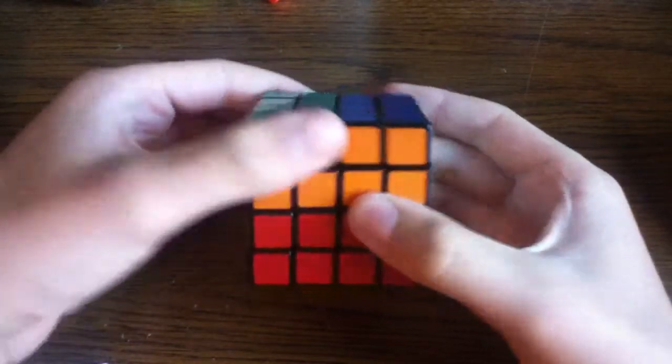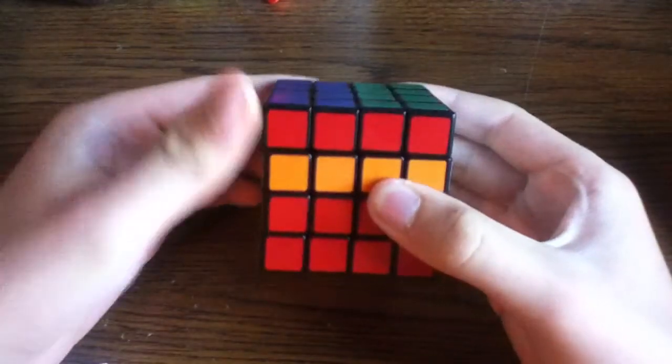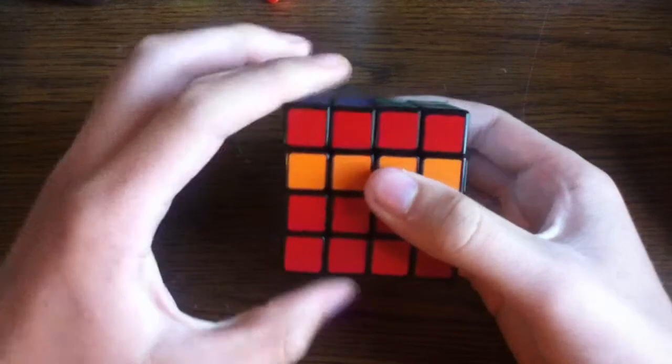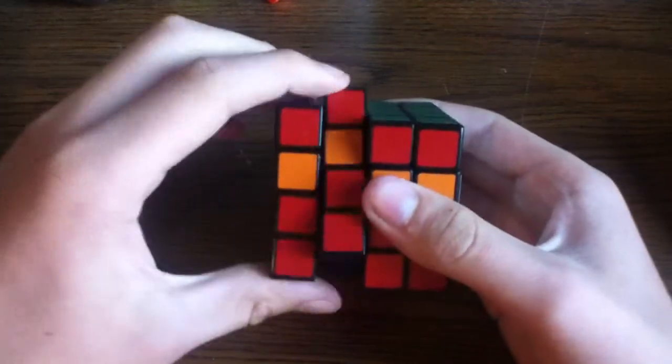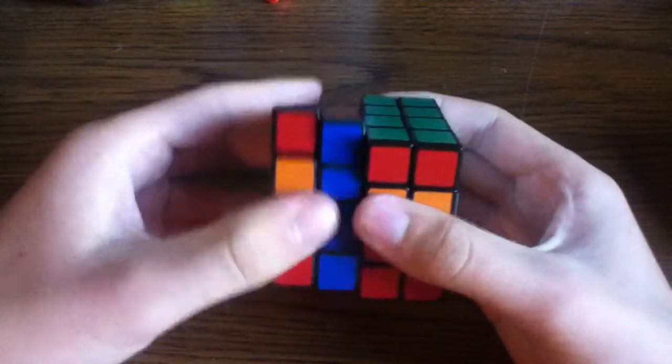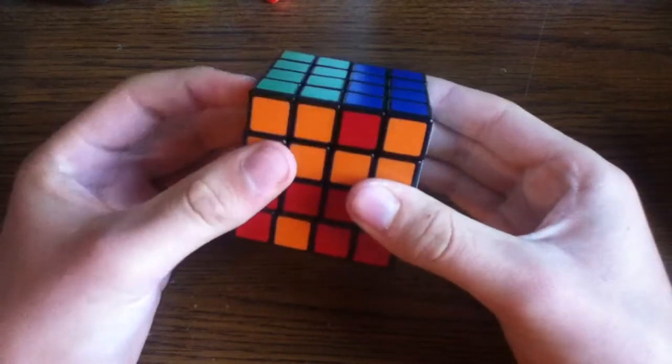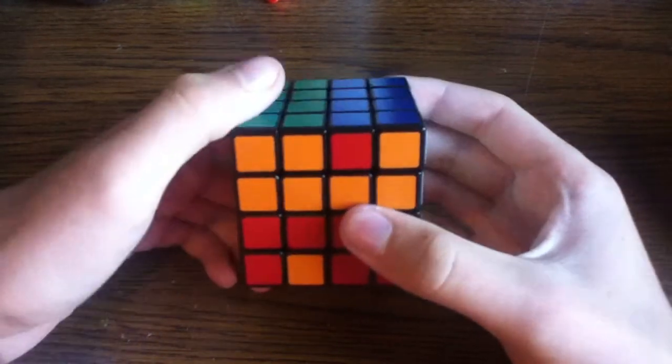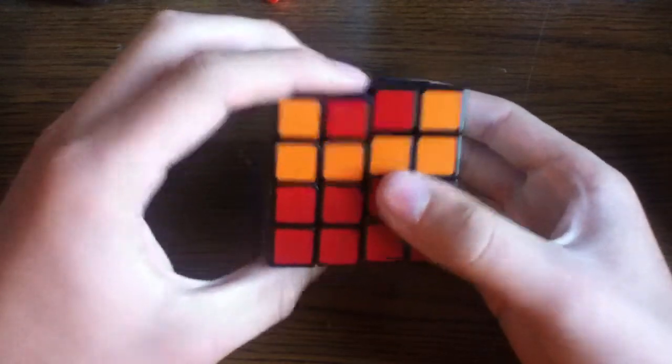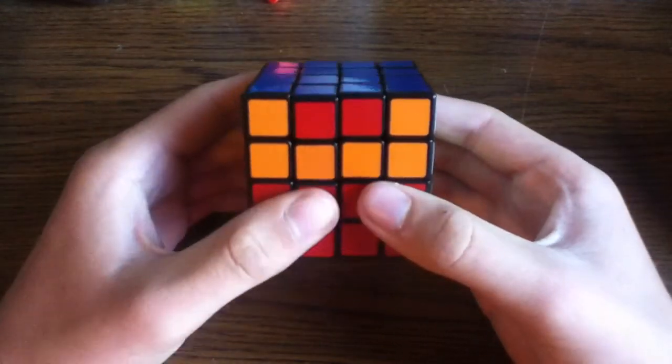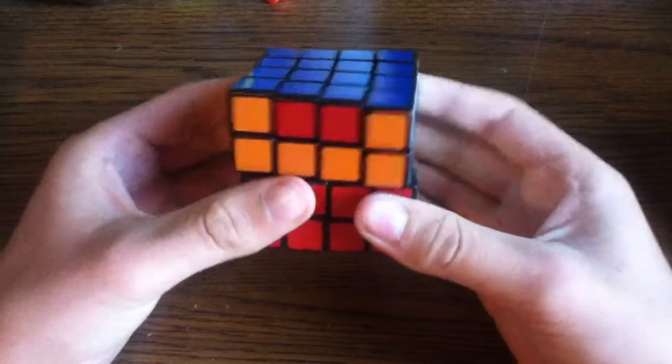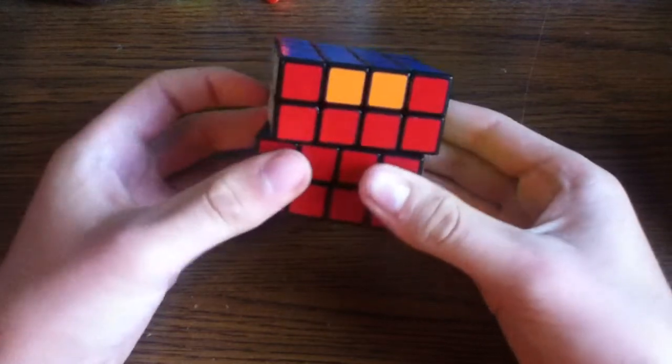Then take the top side, rotate that 180 degrees, then take this middle left layer right here and turn that 180 degrees. Then you take the top again, rotating it 180 degrees, rotate the whole left side, the left two layers, rotate that 180 degrees, then rotate the top two layers 180 degrees.